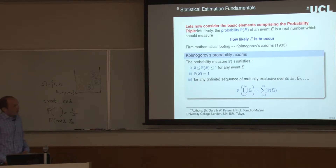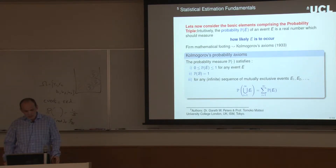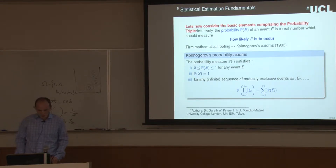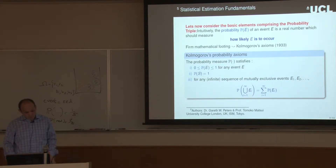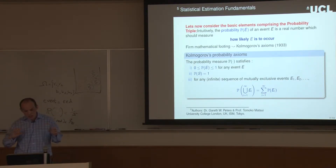Intuitively, the probability of an event E is a real number measuring how likely that event is to occur. To give this rigorous mathematical footing, Kolmogorov in the 1930s set out the following axioms: every event's probability should be between 0 and 1; the probability of the entire space equals 1; and any sequence of mutually exclusive events should have probability equal to the sum of the individual probabilities. For any finite sequence, the probability of the union equals the sum of the individual probabilities.